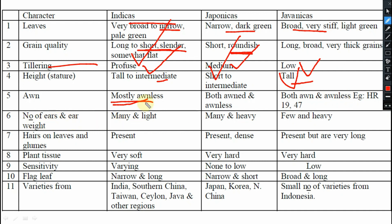Number of ears and weight - indica: many and light; japonica: many and heavy weight; javanica: few but heavy weight. Hairs on leaves and blooms - present in indica; japonica: present and dense; javanica: present but very long. Plant tissue - indica: soft; japonica: hard; javanica: very hard. Sensitivity - indica: varying; japonica: non to low; javanica: very low. Flag leaf - indica: narrow and long; japonica: narrow and short; javanica: broad and long. Varieties developed from - indica: India, Southern China, Taiwan, Sri Lanka, Java; japonica: Japan, Korea, North China; javanica: small number of varieties from Indonesia only.